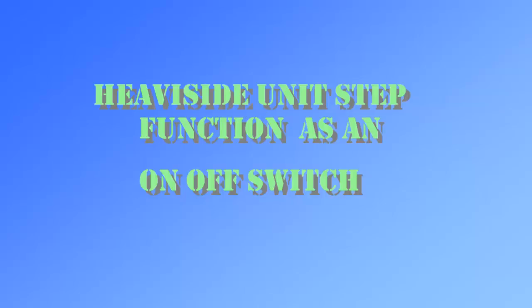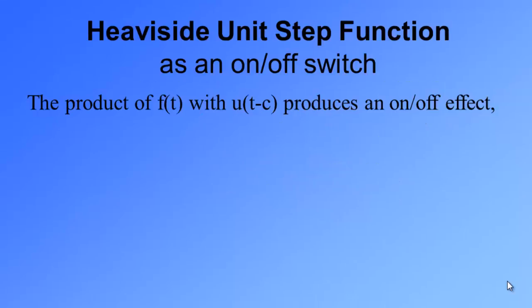This video will explain how the Heaviside unit step function behaves as an on-off switch. The product of f(t) with unit step function u produces an on-off effect. u(t-c) times f(t) is equal to either 0 or f(t). It is equal to 0 if t is less than c, and is equal to f(t) if t is greater than c.